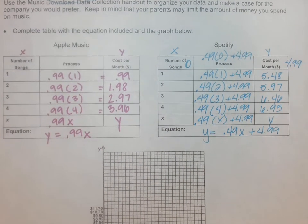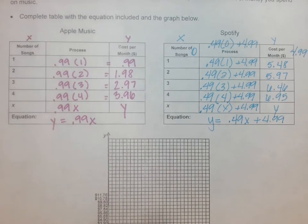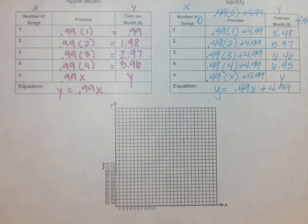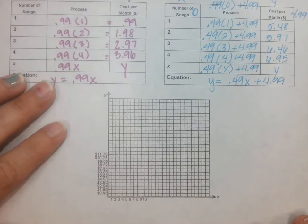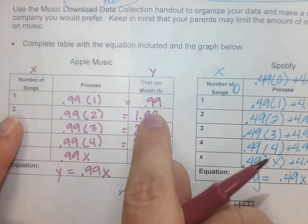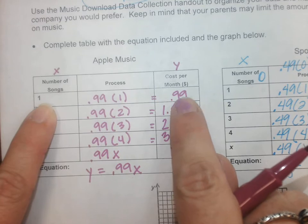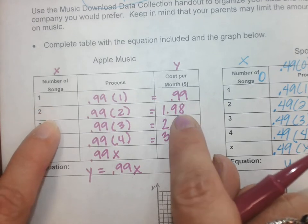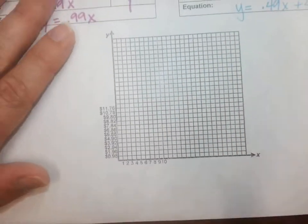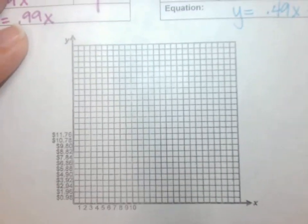You're checking your answers there. So we've got my tables and now we're going to graph both of these. I'll keep Spotify in blue and I'm going to zoom in. Remember, what are my ordered pairs? 1 comma 99, 2 comma 198, 3 comma 297.